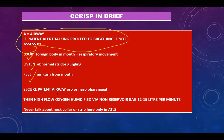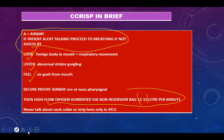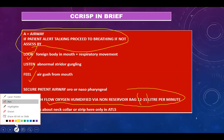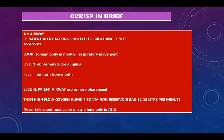You will then secure patent airway by oral or nasopharyngeal airways, and connect the patient to high-flow oxygen via a non-rebreather bag. High-flow oxygen is 12 to 15 liters per minute. Never talk about a neck collar or strap here — that is only in ATLS.